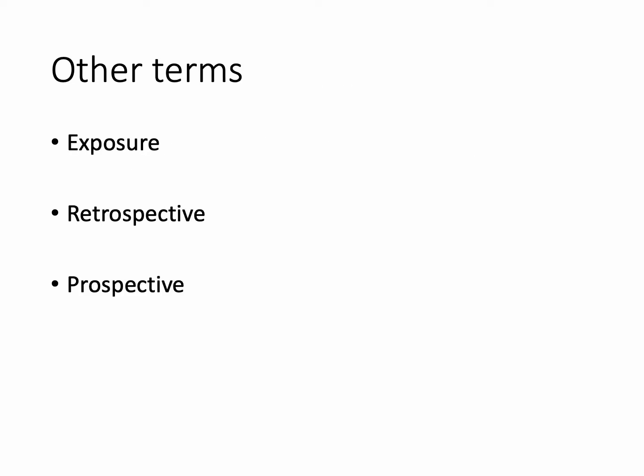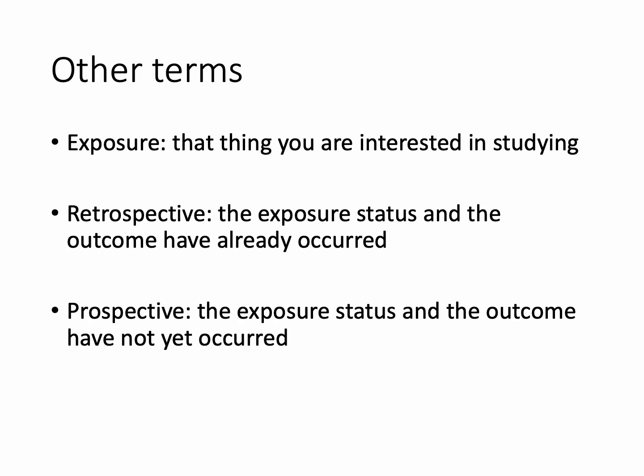There are a few other terms worth clarifying: exposure, retrospective, and prospective. Exposure is the thing you're interested in studying. For example, I was interested in whether SGLT2 inhibitors increase a person's risk of fracture — the exposure is SGLT2 inhibitors and the outcome is fracture. A study is retrospective if, at the time you're conducting it, the data has already been accrued, the exposure status is known, and the outcomes have already occurred.